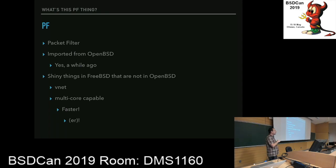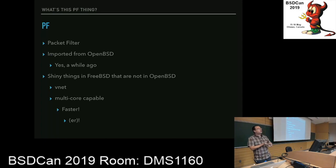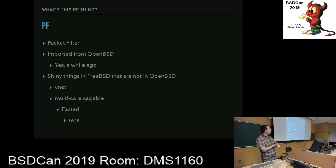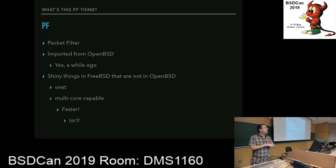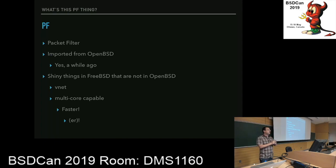Anyway, what is PF? PF is a packet filter. We imported it from OpenBSD. The last import was a while ago, so what we have is an older version — not exactly what's in OpenBSD at the moment. But we also have a couple of shiny things in FreeBSD that are not in OpenBSD: one is VNAT, and another is that our PF runs multi-core, which means it's faster. I keep recommending that people use IPFW, but our users really like OpenBSD's firewall.